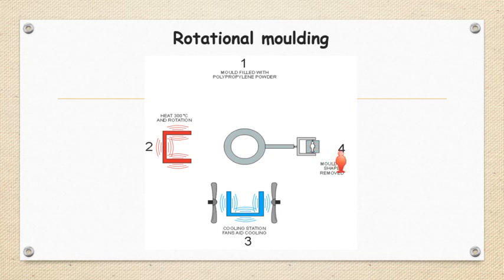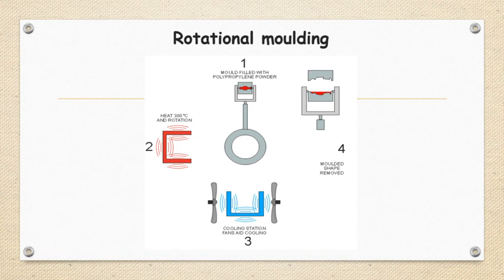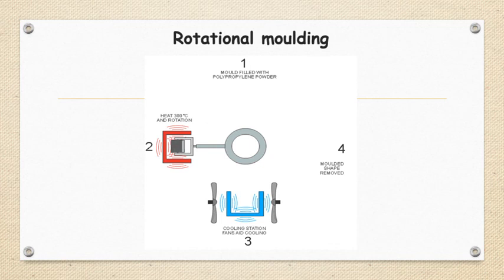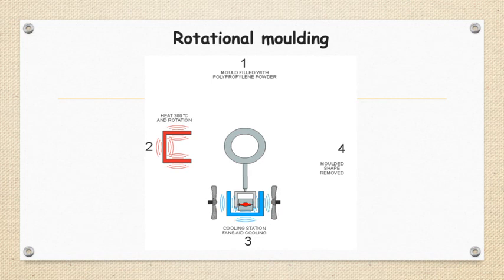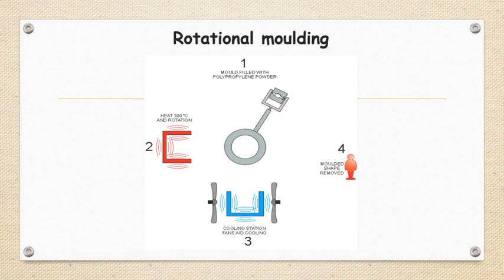Before that, I would like to tell you these processes are generally used for making large water tanks. You will always wonder how these water tanks and syntax tanks are made up - these are made up of this rotational molding process. This process can be used for making luggage trays, flower pots, rainwater tanks, road cones, and so on.